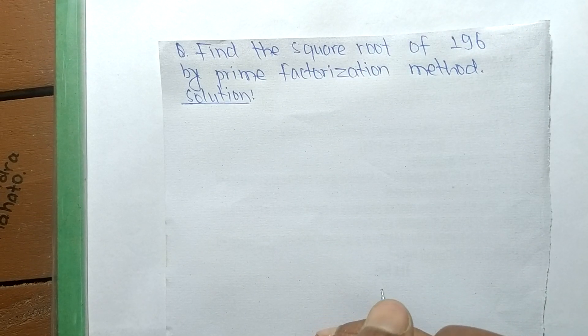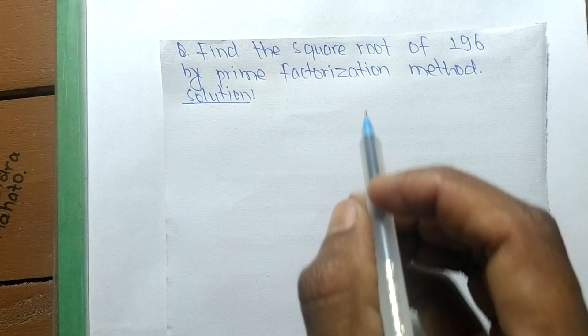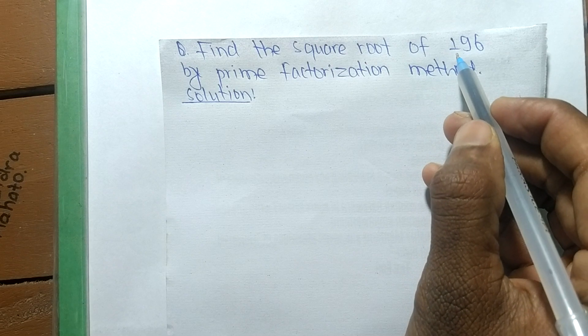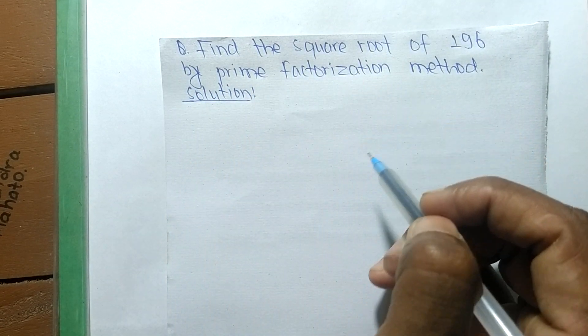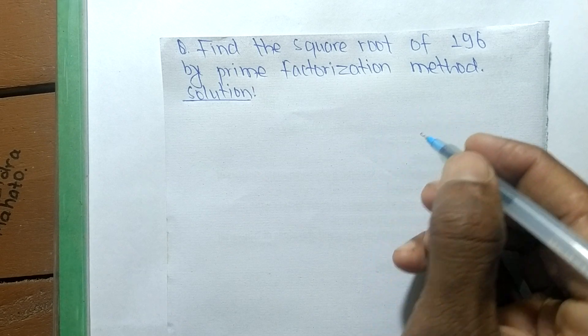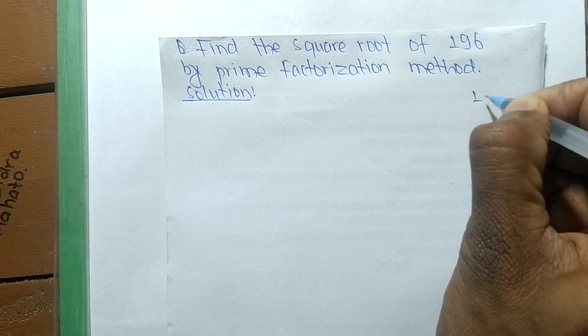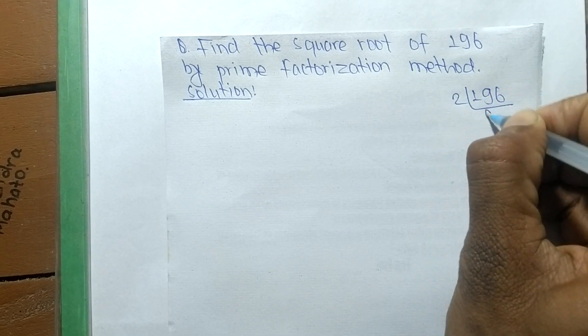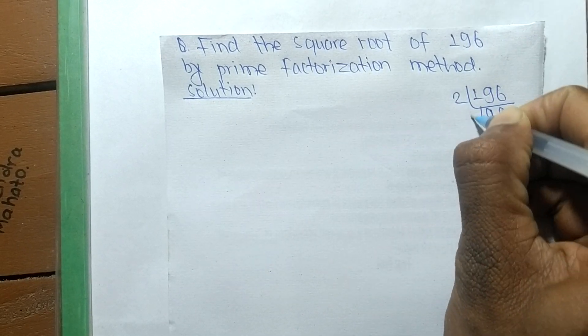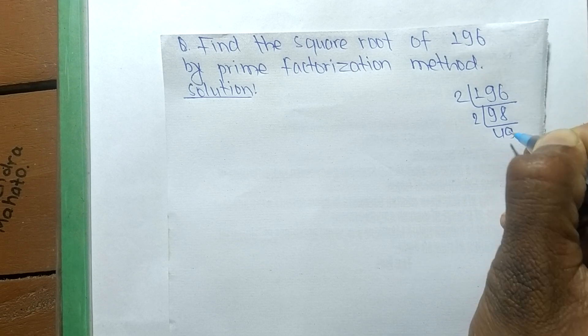Today in this video we shall learn to find the square root of 196 by prime factorization method. First, we find out the prime factors of 196, so it is 2 times 98 and 2 times 49.